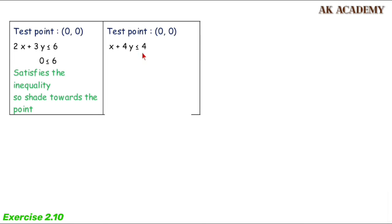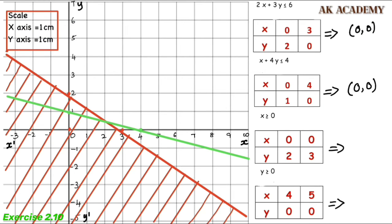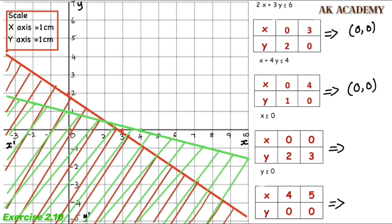We test the origin (0,0): 0 plus 4 times 0 equals 0, which is less than 4. So the inequality is satisfied at the origin. We shade the region on the origin side, which is the base region. We are now shaping the region for this second inequality.